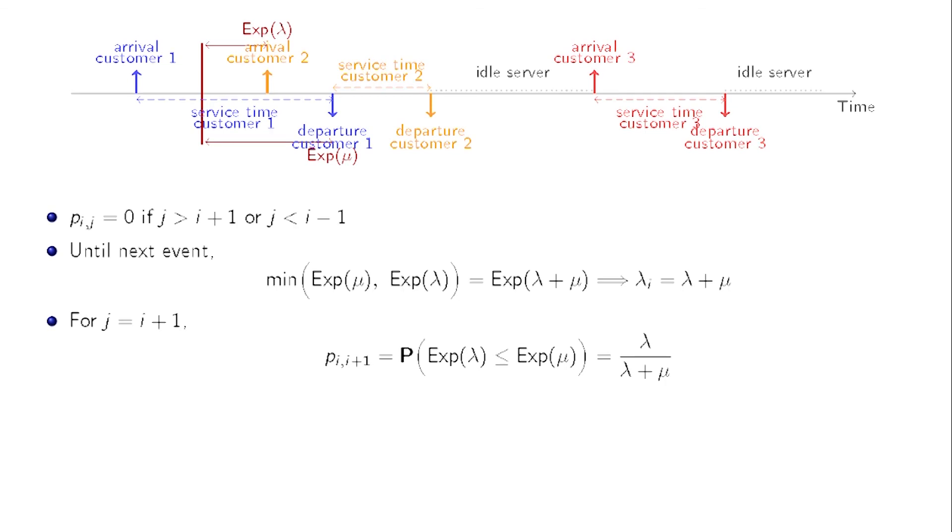The process jumps from i to i-1 with the complementary probability, which is mu over lambda plus mu. So, p_{i,i-1} equals mu over lambda plus mu.